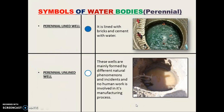Now, water bodies — perennial lined well, also called a pucca well. The symbol is a full blue circle. It is lined with bricks and cement with water. A perennial unlined well, also called a kachha well, is formed by natural phenomena with no human work involved in its construction, and is shown as a blue circle outline. All perennial wells are marked in blue, signifying they have water throughout the year.